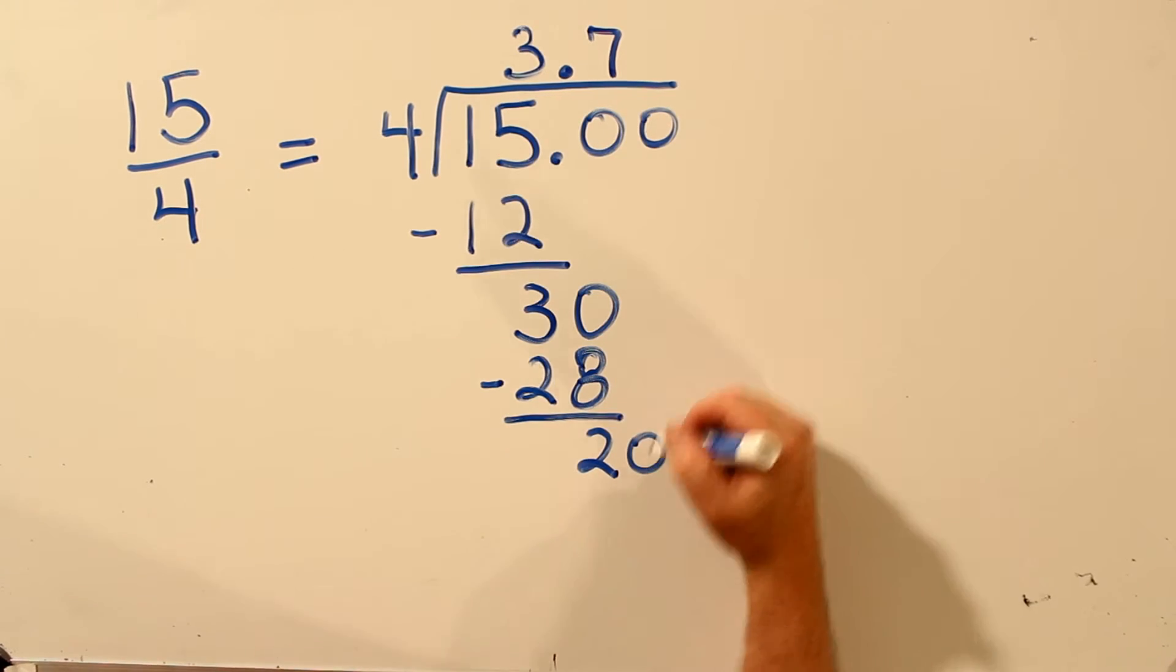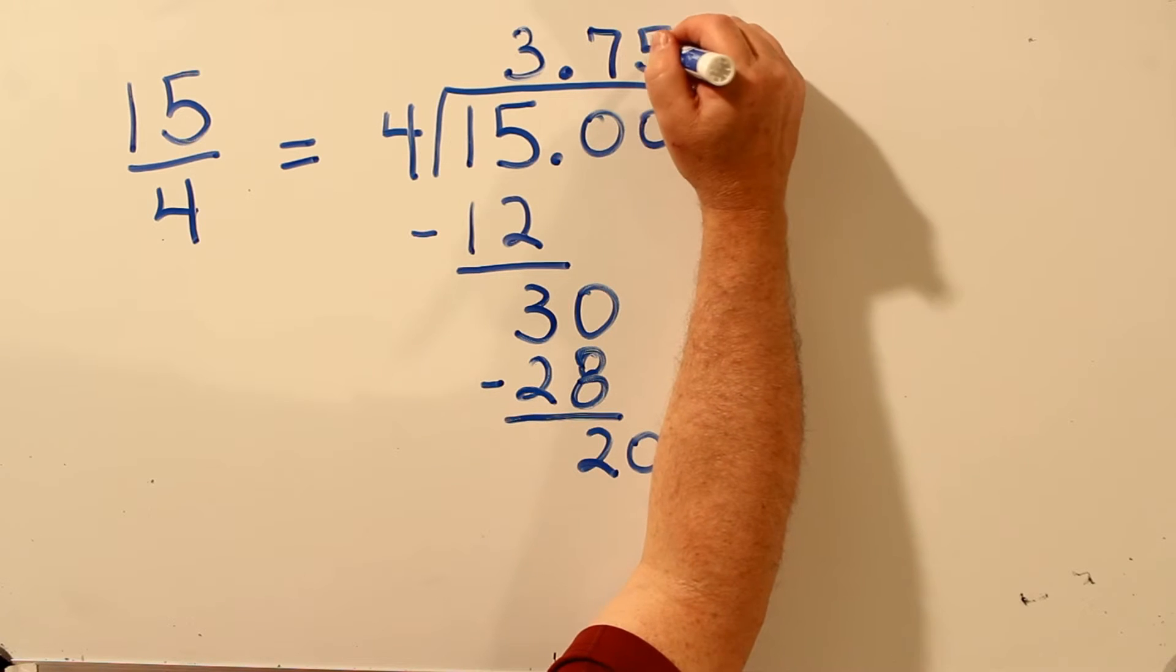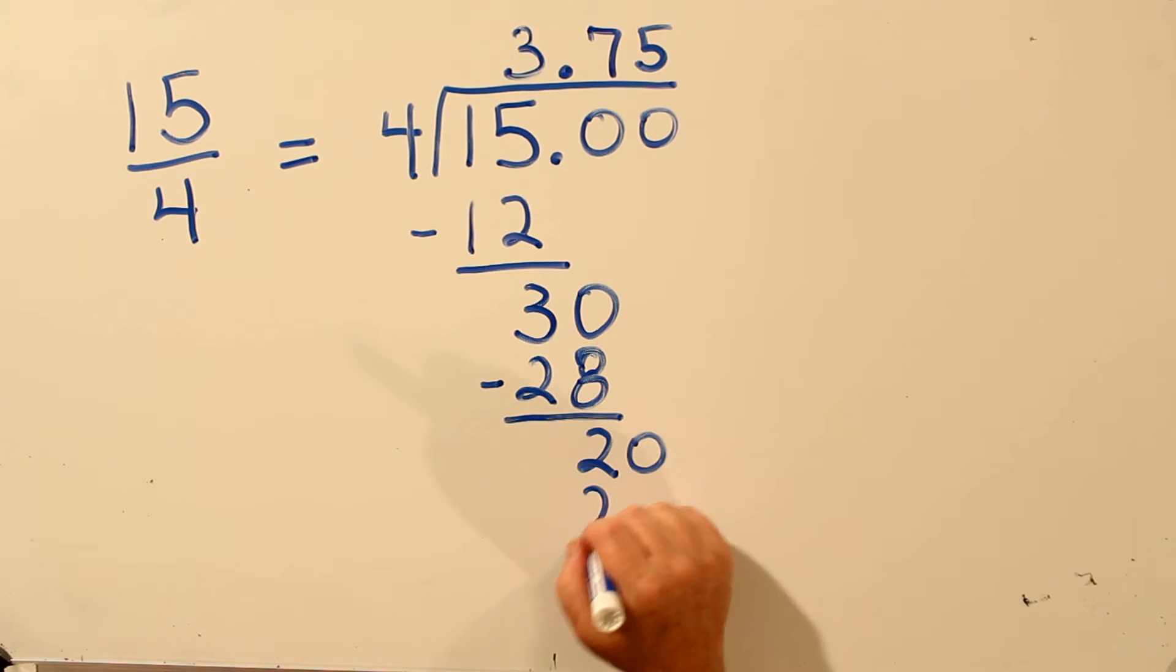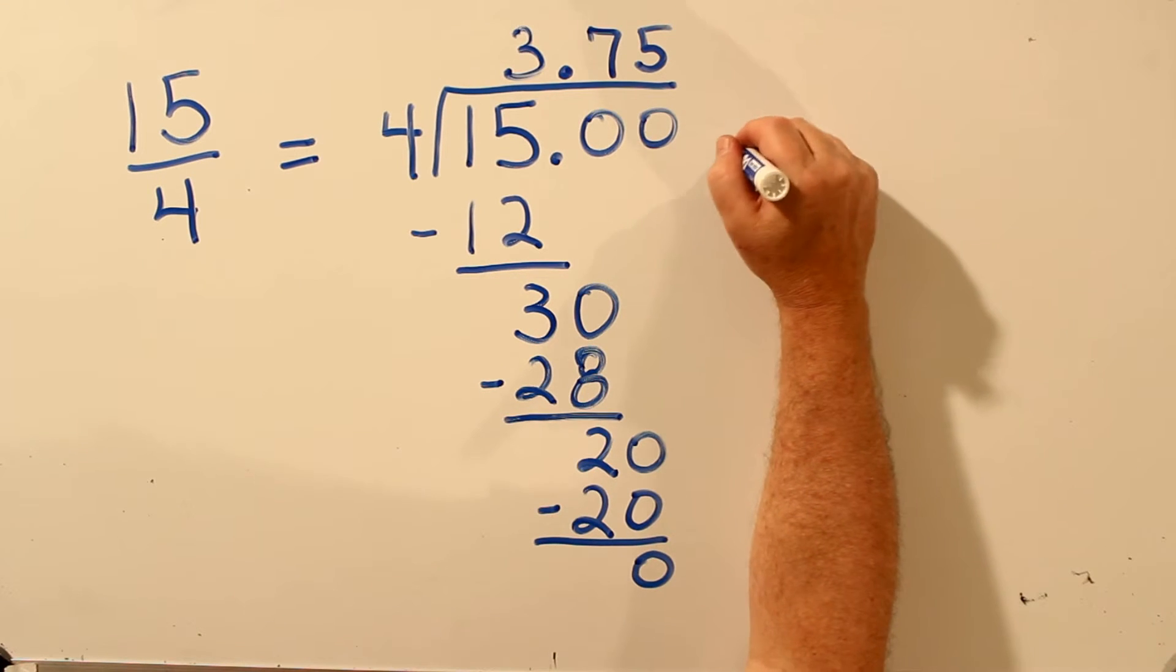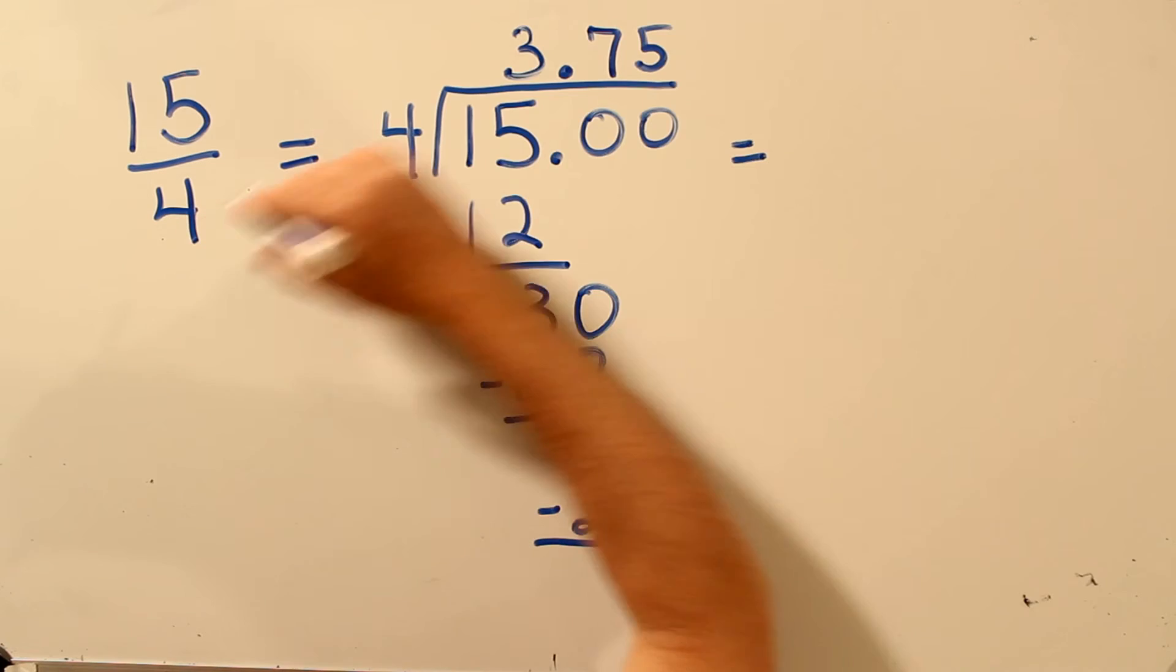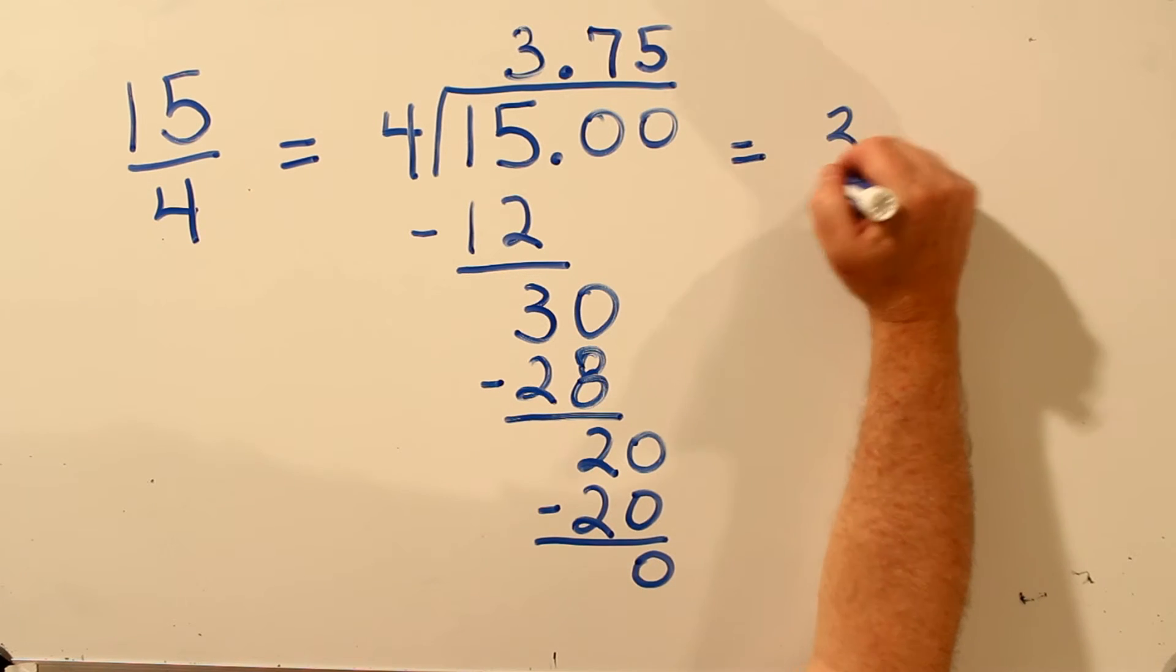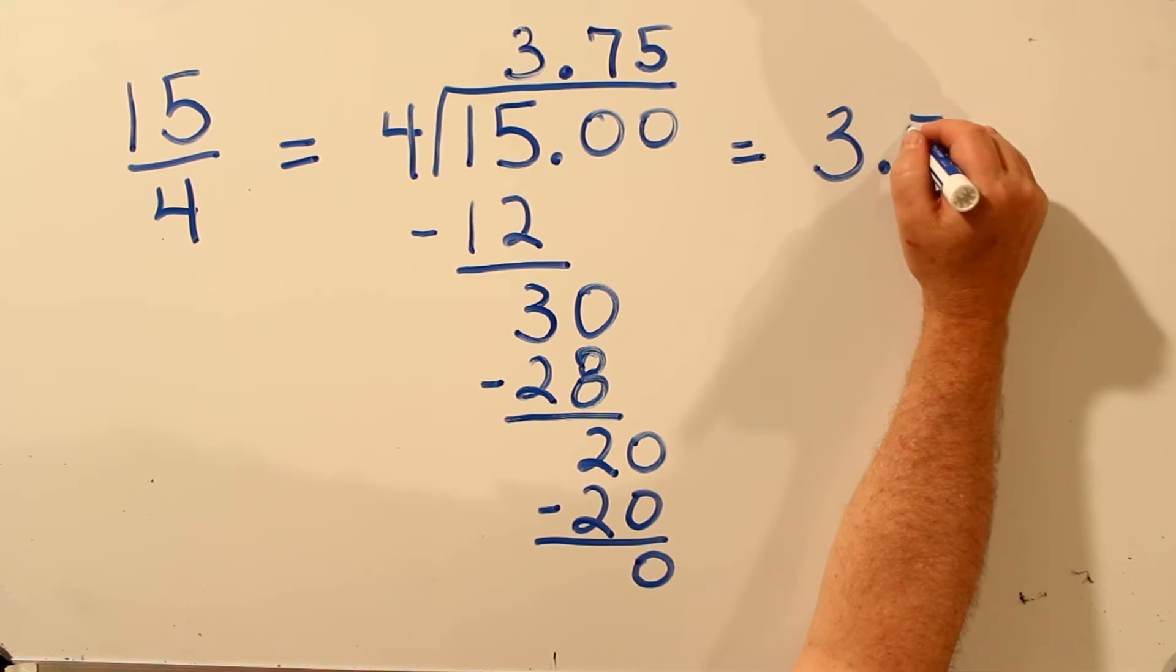4 goes into 20, 5 times. 5 times 4 is 20. Subtract. Remainder 0. And so we're done. 15 fourths, written as a decimal, is 3.75.